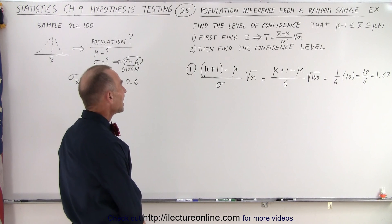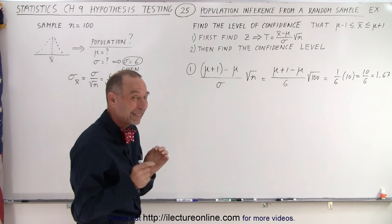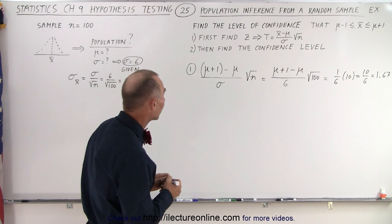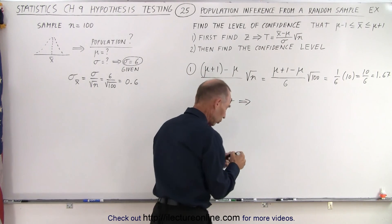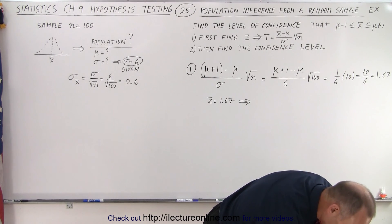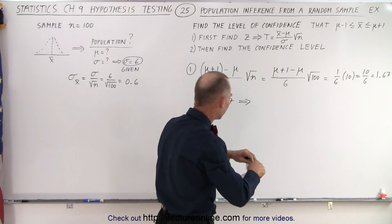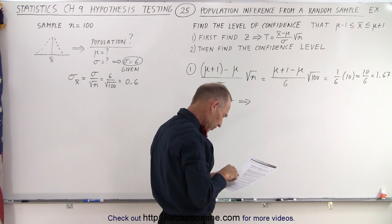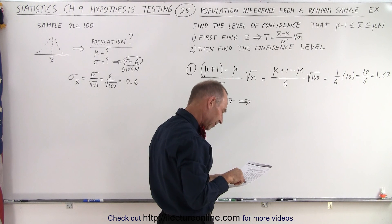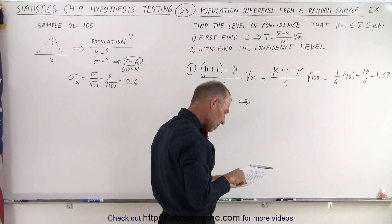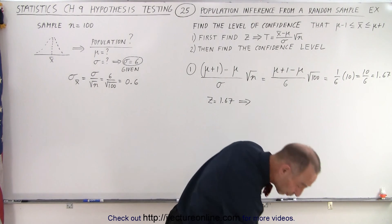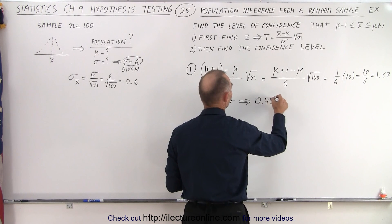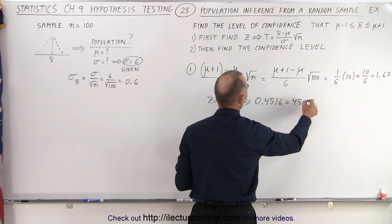That gives us a Z score, or the test statistic, which we can then use a table to find what that's equivalent to. So if Z is equal to 1.67, on the table that corresponds to a value of approximately 0.4516, or 45.16 percent.